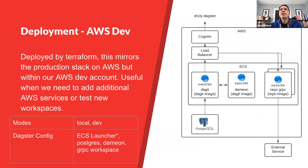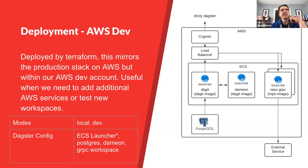Our dev deployment is Dagster running on AWS resources — we built our own stack around ECS, we don't use EKS. It looks pretty similar to Docker Compose, but we're just using AWS resources at this point. And then our production stack is the exact same stack, just on a different account.